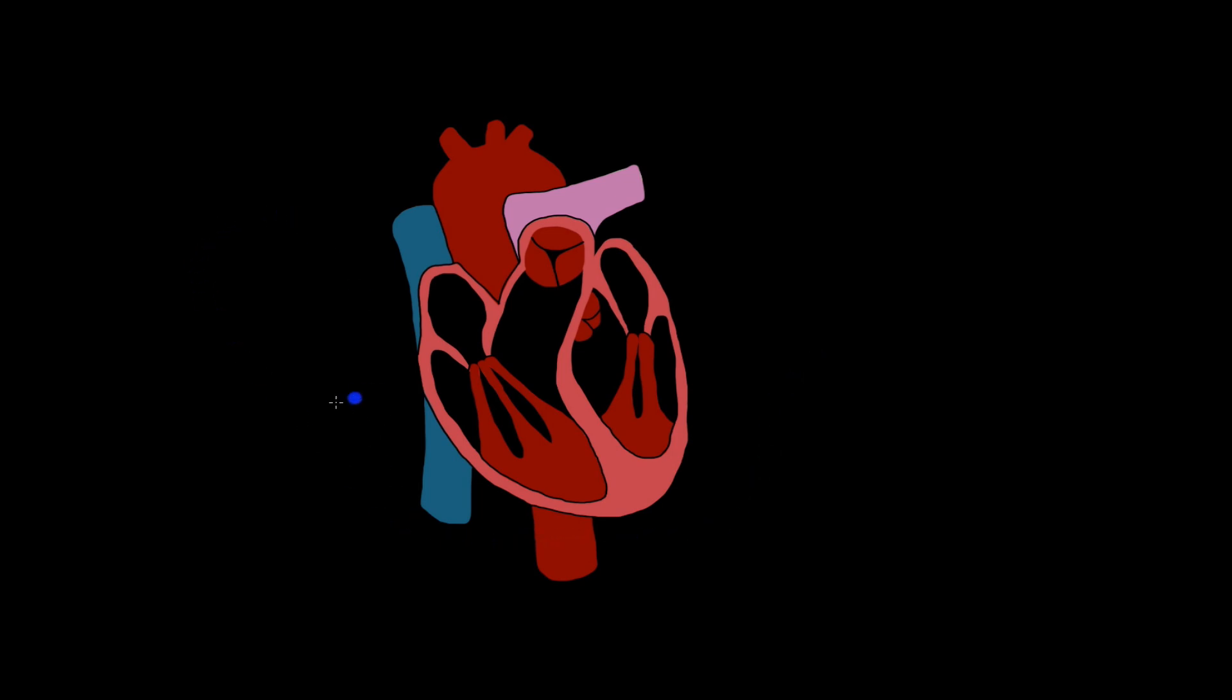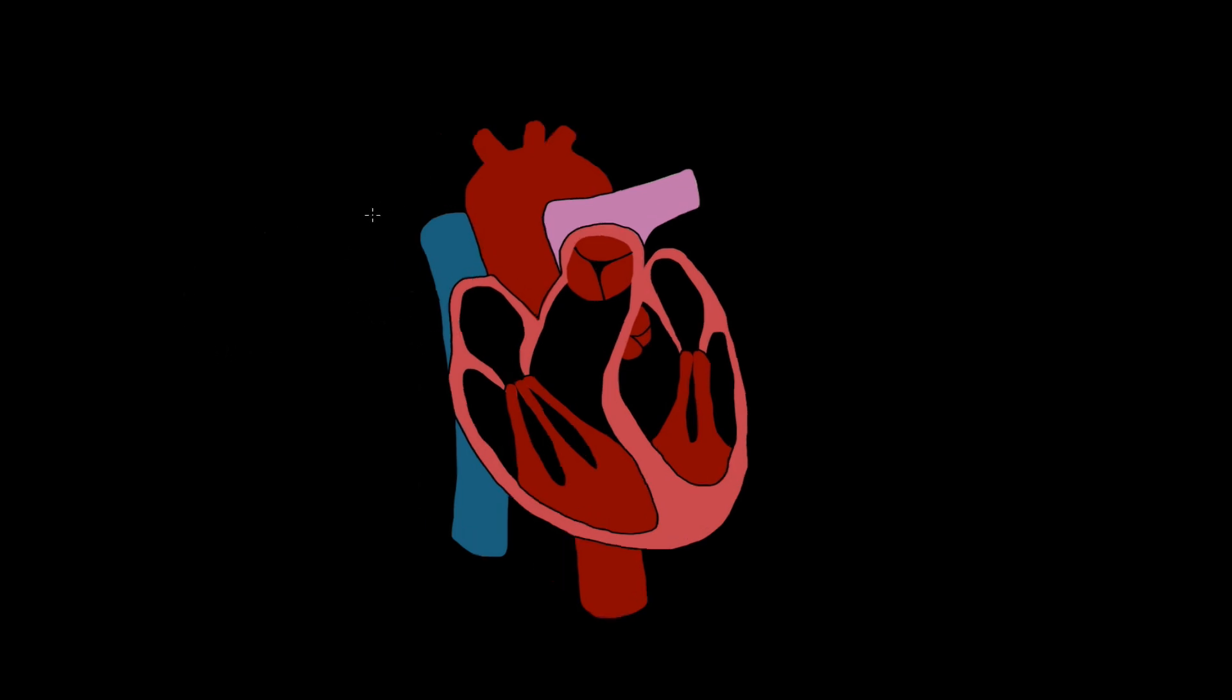Before we talk about it, let's run through the blood flow of the heart. We start here from the superior vena cava and the inferior vena cava into the right atrium. Then from the right atrium, we're going to pass through the tricuspid valve into the right ventricle. I'm making this blue because blue represents poorly oxygenated blood. This is poorly oxygenated blood on the right side.